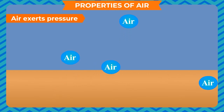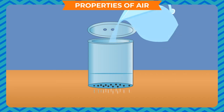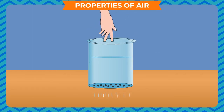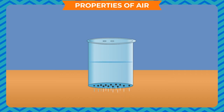Air exerts pressure: to prove this, take a cylindrical box with a cap on one side. Make a few holes on one side and one to two small holes on the cap. Fill half of the box with water and cover the cap. Put your finger on the hole in the cap — water does not flow through the holes on the other end. Now remove your finger from the holes in the cap, and the water starts flowing through the holes. This is because air trapped inside the box exerts pressure on the surface of water, causing it to flow. This shows that air exerts pressure.